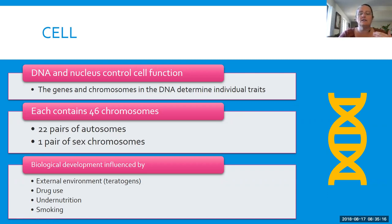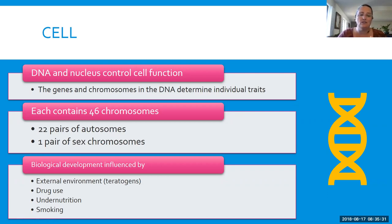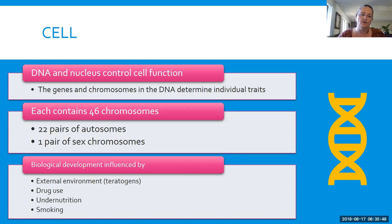There are lots of things in the environment that can actually influence our genes and DNA. There are things called teratogens that can actually change our DNA. Some of those are medications, some are street drugs — like ecstasy, which is actually able to change our DNA. Under-nutrition, not having enough nutrition, will definitely change our DNA and affect how we pass on our genes, and smoking influences our DNA as well.